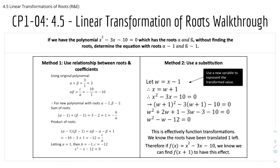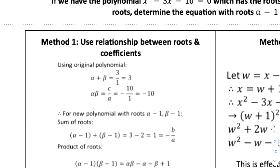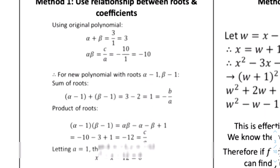Method 1 uses the relationship between roots and coefficients. From the original polynomial, alpha + beta equals -b/a, which is minus(-3)/1 = 3. And alpha·beta equals c/a = -10. For the new polynomial with roots (alpha - 1) and (beta - 1), the sum of roots is (alpha - 1) + (beta - 1) = 3 - 2 = 1, which equals -b/a. The product of roots is (alpha - 1)(beta - 1), which expands to give -12, equal to c/a.